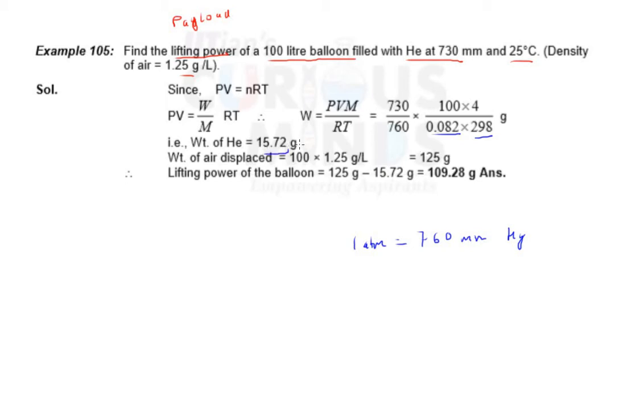Now we will find the weight of air, which is this much volume - 100 liters. Air density is 1.25 gram per liter. 1 liter is 1.25 gram weight of air, right? Density is the weight. So how much weight is in 100 liter? Simple - 1.25 times 100. Weight is density into volume, so 125 grams.